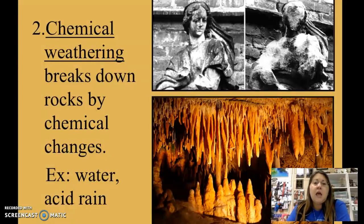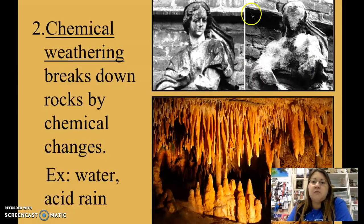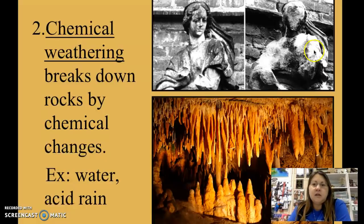Chemical weathering is the second type, using chemical reactions to break down rocks. This picture shows acid rain weathering the surface of a limestone statue. The acid has eaten away at the surface so much that the facial features are no longer visible, and the robe the figure is wearing has completely eroded.